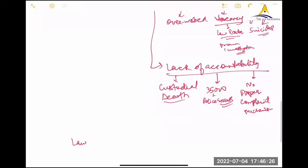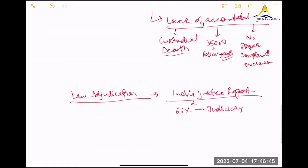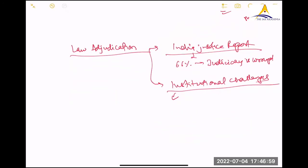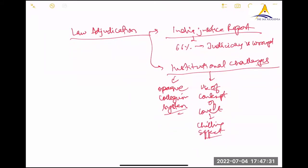So, secondly, law adjudication or judiciary according to India justice report 66% of the people believe that judiciary is corrupt or they were asked for bribe to do that. There are certain institutional challenges also in judiciary. What are the institutional challenges? Tell me any institutional challenge. Appointments. One thing is opaque collegium system that is one institutional challenge. Use of contempt of court provisions. This have a chilling effect. When the judiciary, which should be the protector of freedom of speech and expression, if it is going for contempt of court, it has a chilling effect on freedom of speech and expression.